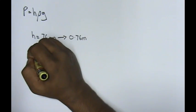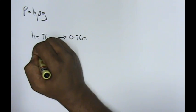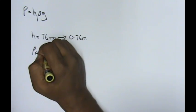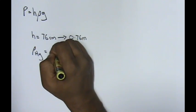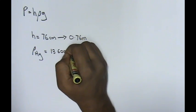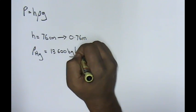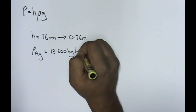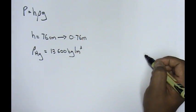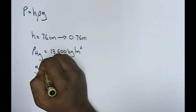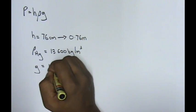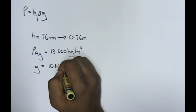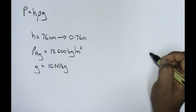Next, given to us, the density for mercury. The density for mercury is 13,600 kilograms per cubic meter. And lastly, gravity, the value is given to us as 10 newtons per kilogram.